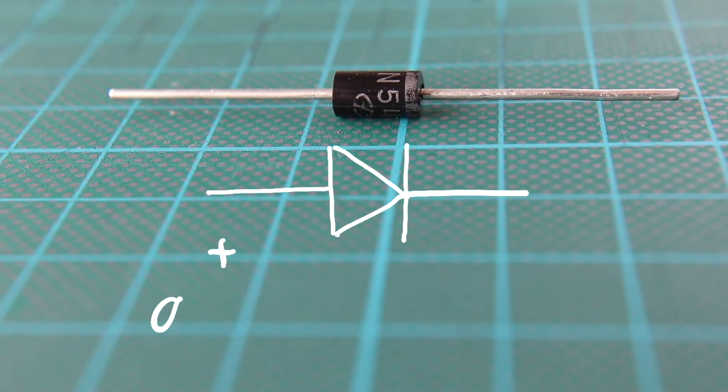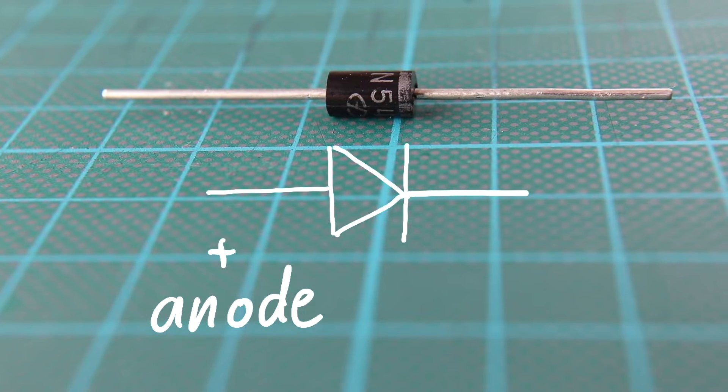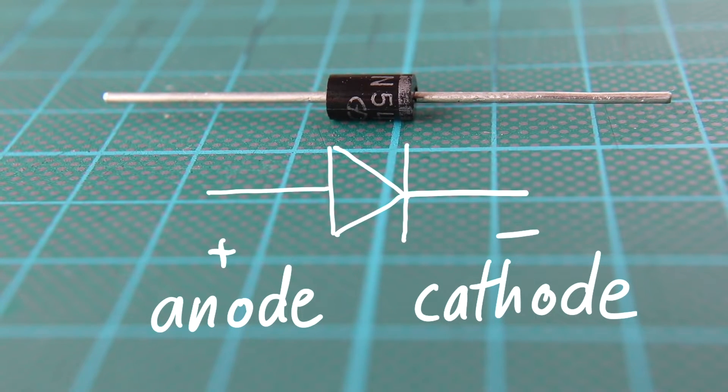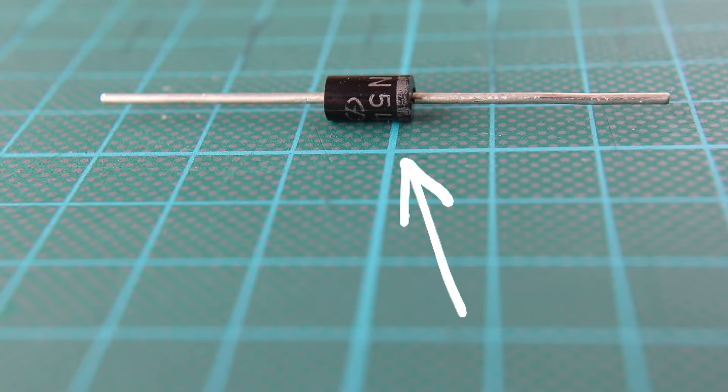The two terminals of a diode are called anode and cathode. On an actual diode, the cathode is marked by a band.